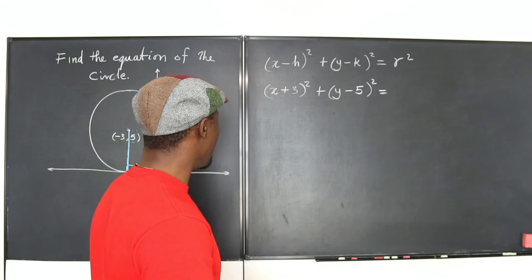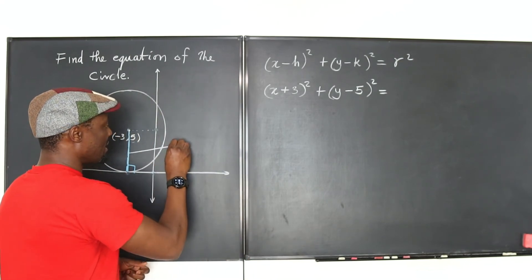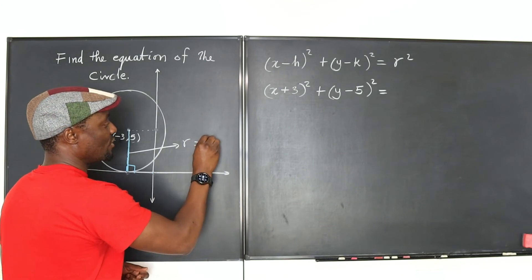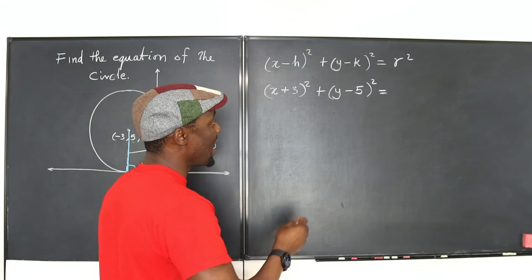Okay? So, now I can tell that the radius is equal to 5. It is the height of the circle from the x-axis.